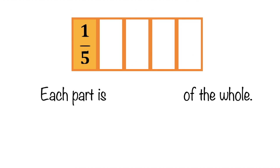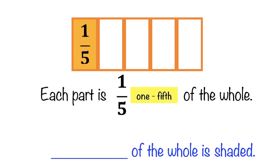How about if we have this? Each part is blank of the whole — what is the answer? That's correct, each part is one-fifth of the whole. How about this? Blank of the whole is shaded — how many are shaded? That's correct. Since we have one shaded part, the fraction is one-fifth. So one-fifth of the whole is shaded.